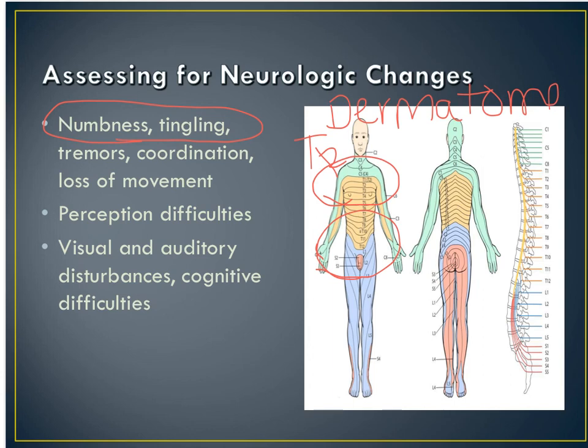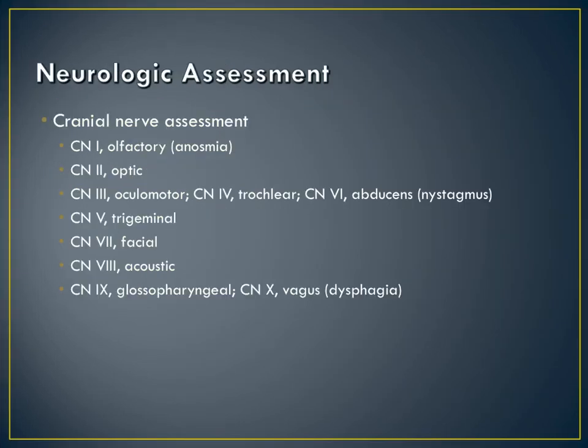Perception difficulties — you want to document if a patient is having difficulty with perception, depth perception. Visual and auditory disturbances can all be suggestive of cranial nerve issues. The first cranial nerves run off the brainstem, so that's why we hate to have brainstem injuries, because then you can lose or not have intact cranial nerves.